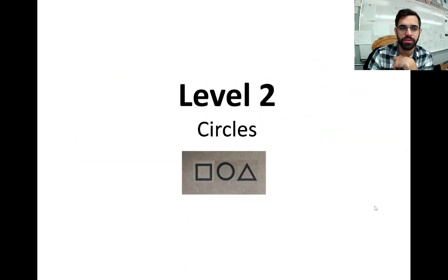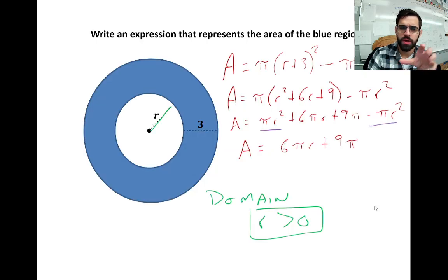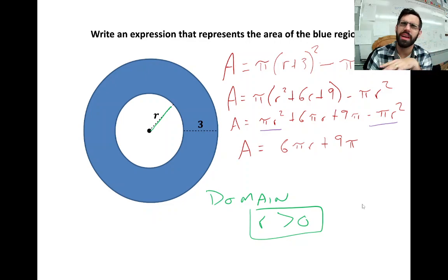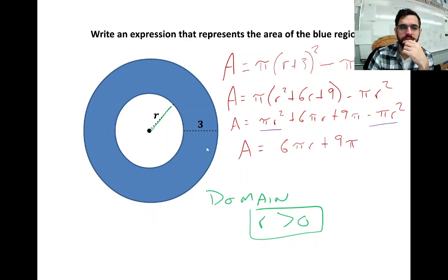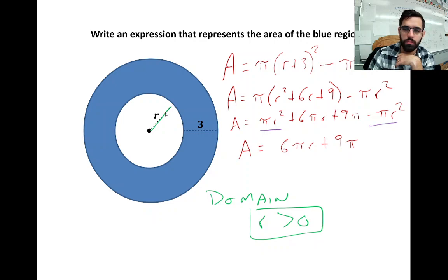Moving on to circles. We have a blue circle with a circular hole cut out of the center. What's the area of the shaded blue region? The area of the big circle is π times the radius squared. The radius of the little circle is r, so πr² is the area of the white region.